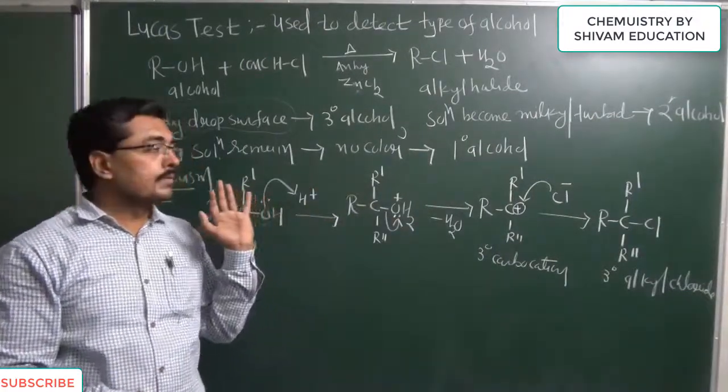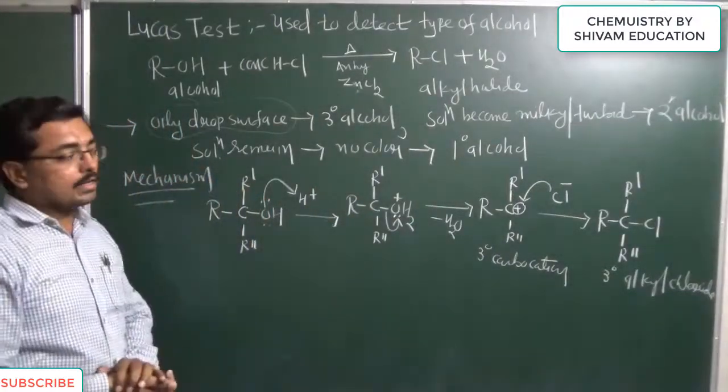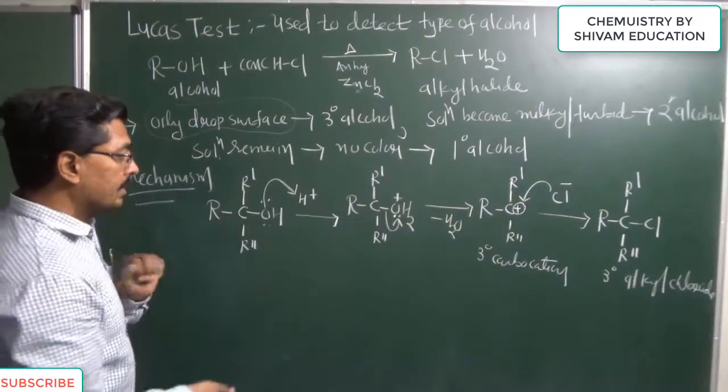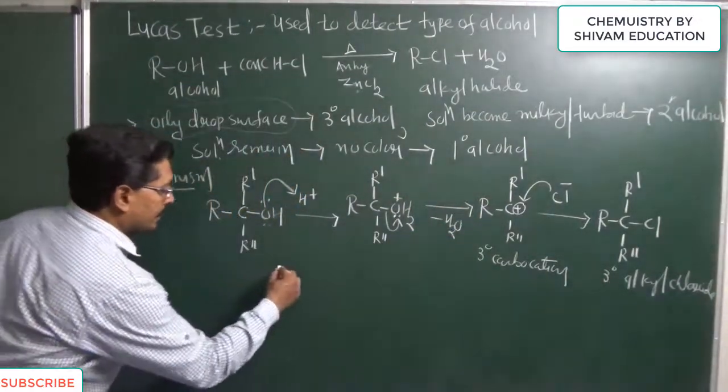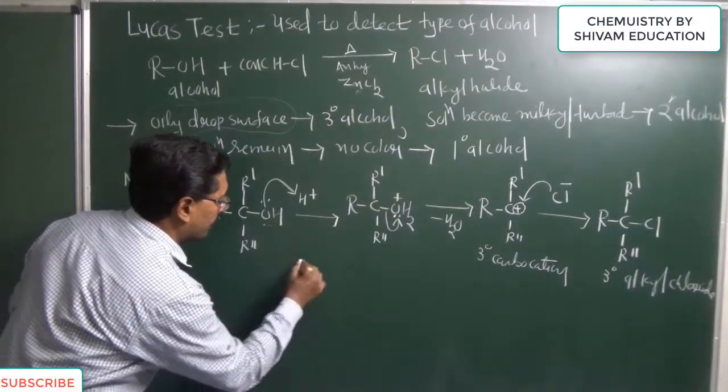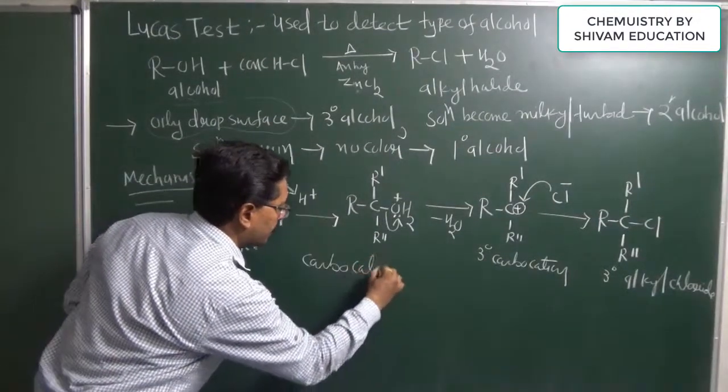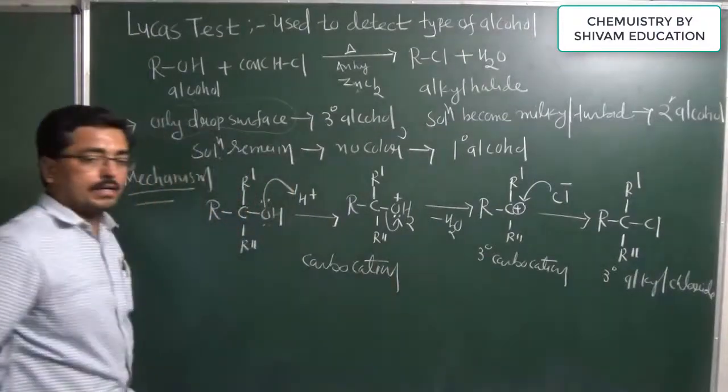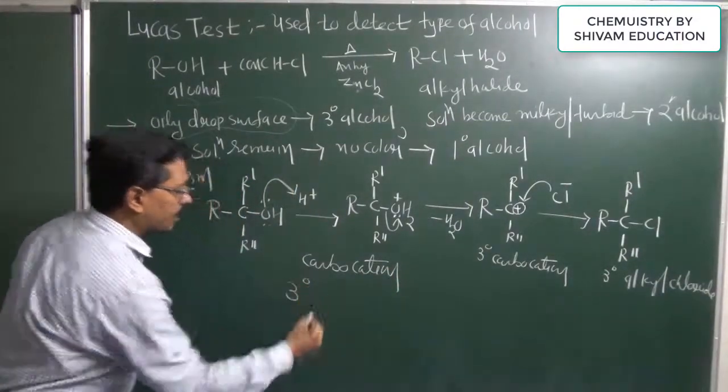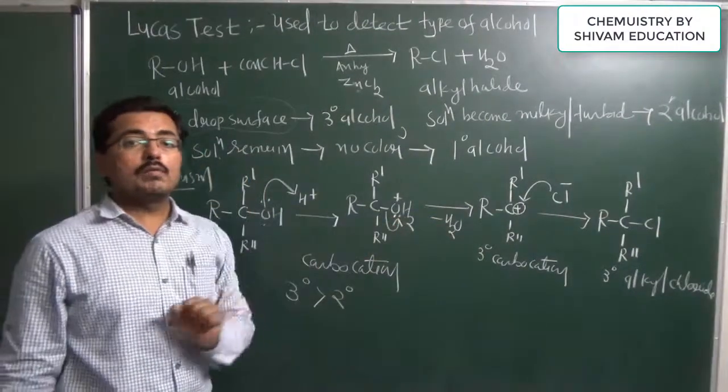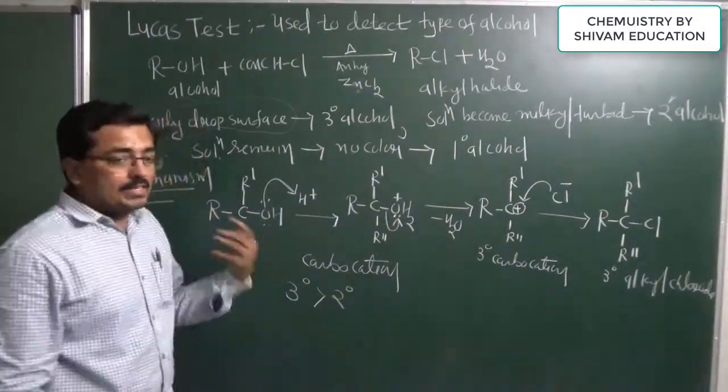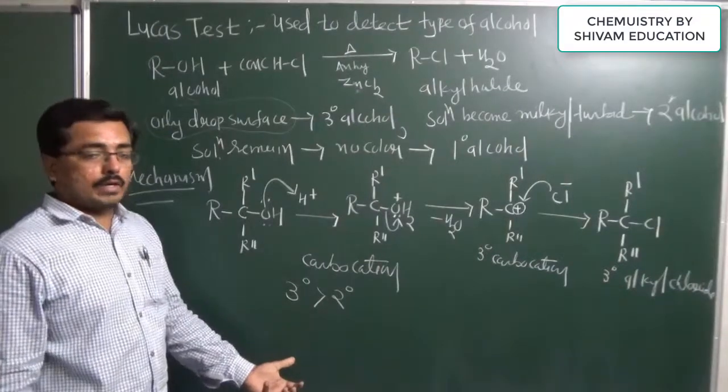So it will be in the form of oily drop on the surface of test tube or beaker. So type of alcohol is tertiary alcohol. Now in case of secondary alcohol, this reaction is slow. So you know the stability of carbocation. This all thing is depending upon carbocation. So stability of tertiary carbocation is more, so tertiary carbocation can react very fast to give alkyl halide.